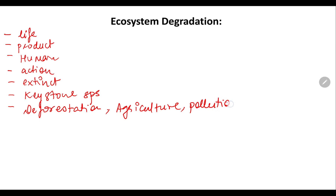There are also species getting extinct due to pollution. There is air pollution, soil pollution, and water pollution. All these forms of pollution caused by humans are responsible for the extinction of a huge number of species. Additionally, the waste produced by humans is also a cause for the extinction of species.